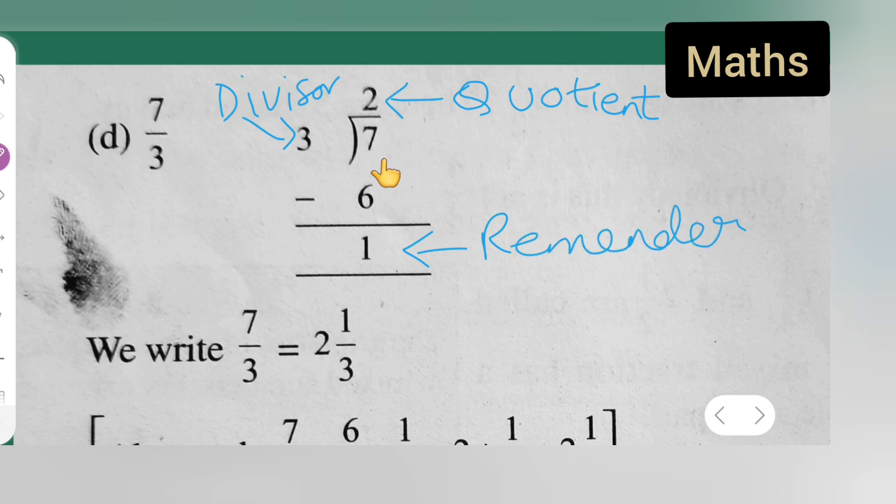Now everything should come in the form of quotient, remainder upon divisor. So this is now, where is your quotient? Can you see the quotient? Quotient is 2, so put 2. Next will be remainder, remainder is 1.